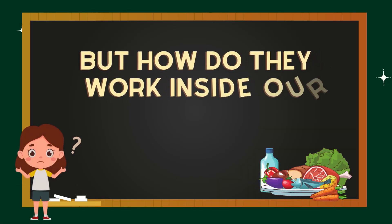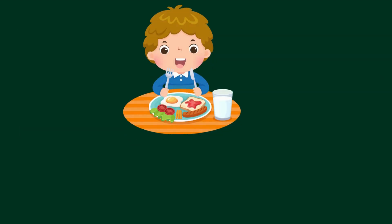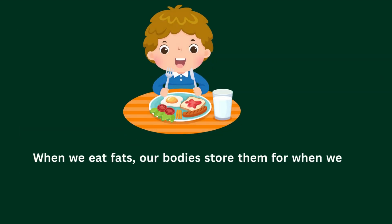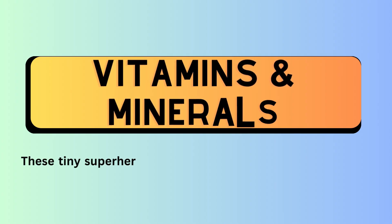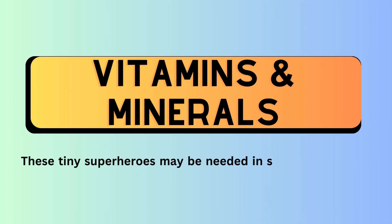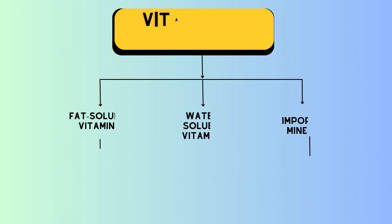But how do they work in our bodies? When we eat fats, our bodies store them for when we need extra energy. They also help in absorbing fat-soluble vitamins. Moving on to our fourth component: vitamins and minerals. These tiny superheroes may be needed in small amounts, but they play a big role in keeping us healthy.